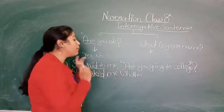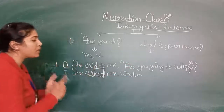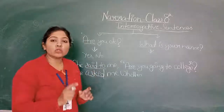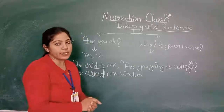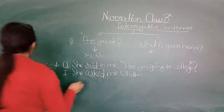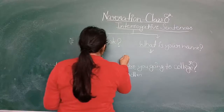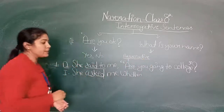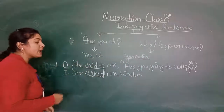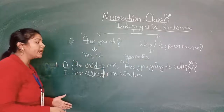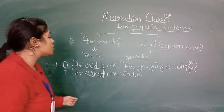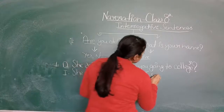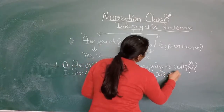Now when we convert an interrogative sentence from direct speech to indirect speech, that sentence does not remain interrogative — it becomes an assertive sentence. To make it assertive, we have to remove everything related to the question format. So the sentence becomes: 'She asked me whether I was going to college.' The second-person pronoun 'you' changes according to the reporting verb's object, so 'you' becomes 'I,' and the tense changes — 'are going' becomes 'was going.'